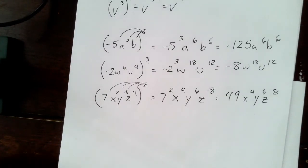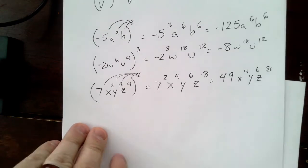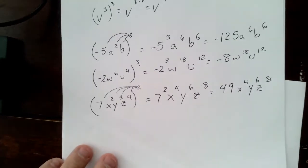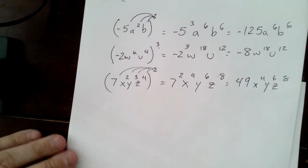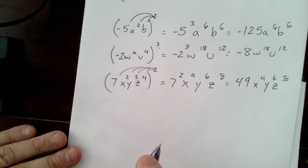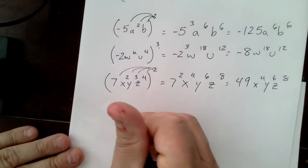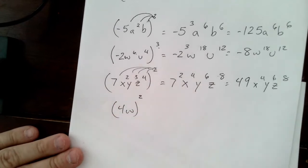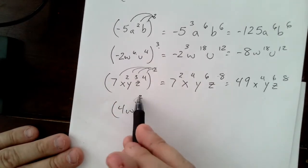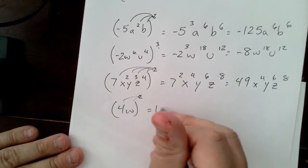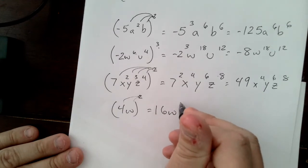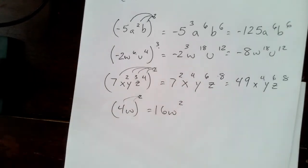Now let's start putting everything we've learned together in this section. If we have four w squared, that squared goes to everything, so that becomes sixteen w squared. I'm going to find a problem from the homework that is new to us.